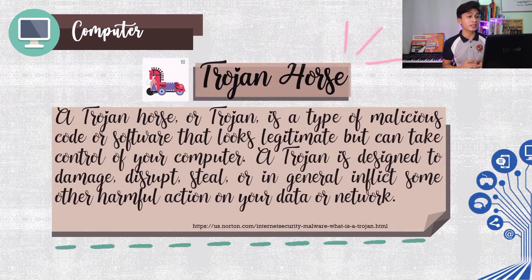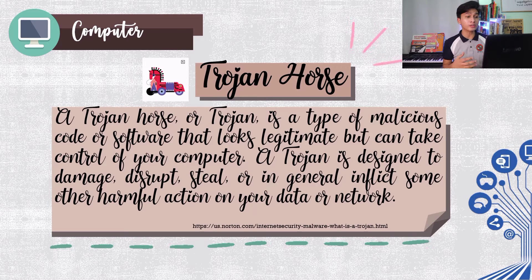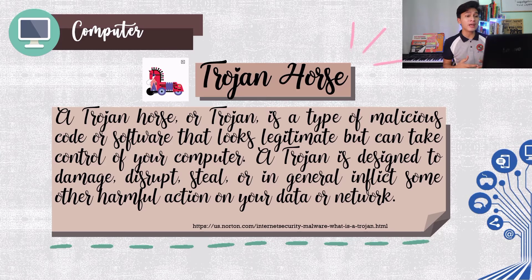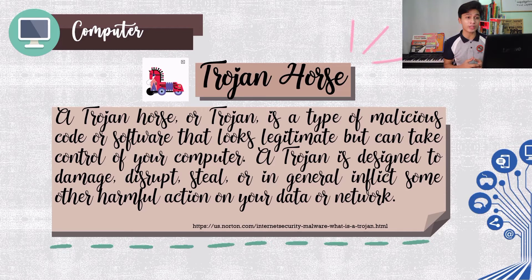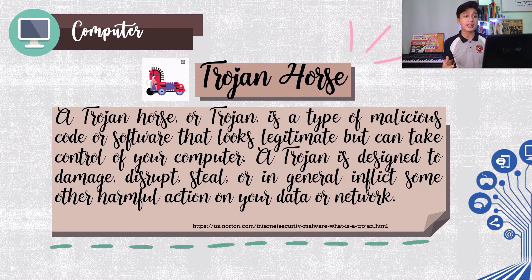The trojan horse. A trojan horse or trojan is a type of malicious code or software that looks legitimate but can take control of your computer. A trojan is designed to damage, disrupt, steal, or in general inflict some other harmful action on your data or network. A trojan is a program that cannot reproduce itself, that masquerades as something the user wants and tricks them into activating it so it can do its damage and spread.